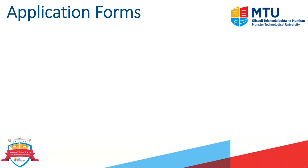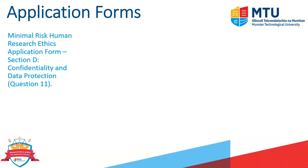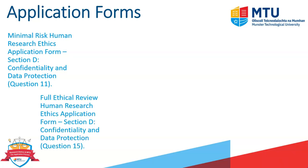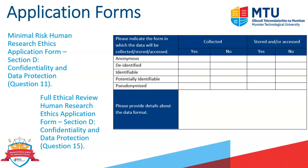Later on in the application form in relation to data format — question 11 for the minimal risk component and question 15 for the full ethical review human research ethics application forms respectively — there is a section on the data format. So will the data be anonymous, de-identified, identifiable, potentially identifiable, or pseudo-anonymized? I'll outline what I mean by each of those in the next couple of slides. In the application form you're stating how you're going to collect the data — it might be identifiable at the start but then you'll make it anonymous — so how you collect it and then how you'll be storing or accessing it later on.